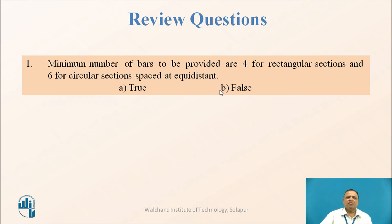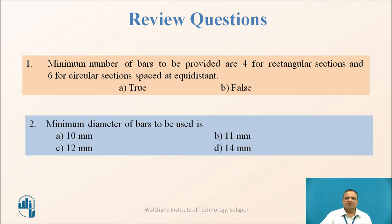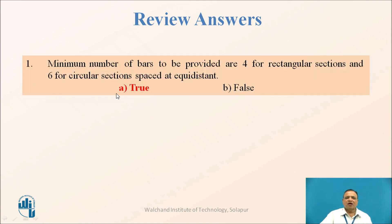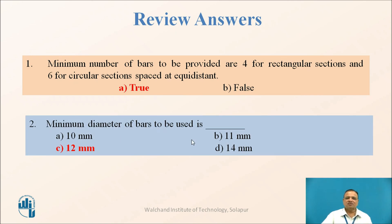Review question: The minimum number of bars to be provided are 4 for rectangular sections and 6 for circular sections — true or false? The minimum diameter of longitudinal bars: is it 10, 11, 12, or 14 mm? The answer to the first question is true. The correct answer to the second question is 12 mm diameter.